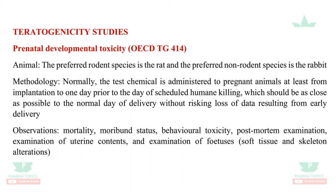Teratogenicity studies: prenatal development toxicity, guideline 414. The rodent species preferred is rat; non-rodent species preferred is rabbit. The test compound is administered to pregnant animals from implantation to one day prior to delivery. Before delivery, uterine contents are examined and the fetus is also examined. All organs go for histopathology and necropsy studies; fetuses are examined for soft tissue and skeletal alterations — which is why this study is called prenatal.